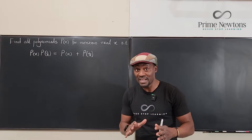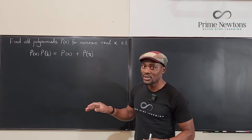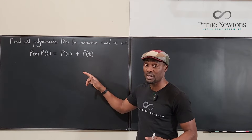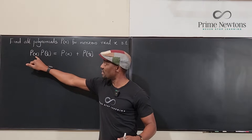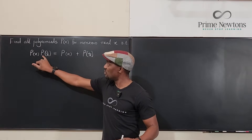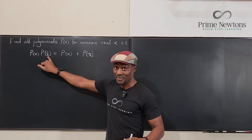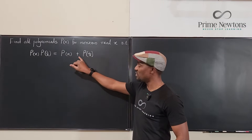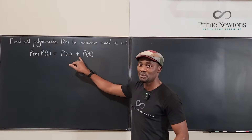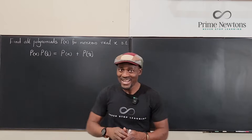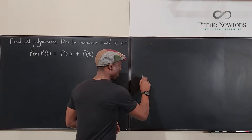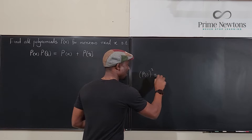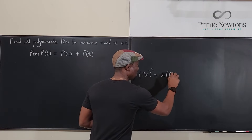The first thing I did was plug in x = 1 just to see what kind of polynomial we're dealing with, because x = 1 is going to work. If I plug in 1, this becomes P(1) times P(1), so P(1) squared equals P(1) plus P(1), which is 2 times P(1).